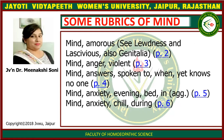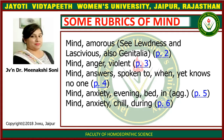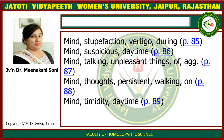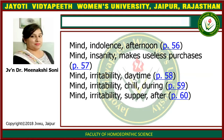Some rubrics of the mind section include: mind amorous, lasciviousness, and lascivious (see genitalia, page two); mind anger violent; mind answers spoken to when — hear close, no one; mind anxiety evening in bed aggravation; mind anxiety chill during; mind stupefaction vertigo during; mind suspicious daytime; mind talking unpleasant things aggravation; mind thoughts persistent walking; mind timidity daytime; mind indolence afternoon; mind insanity makes useless purchases; mind irritability daytime; mind irritability chill during; mind irritability supper after.